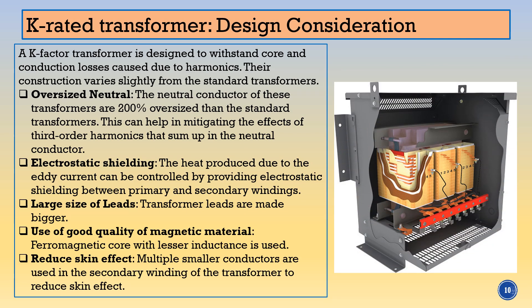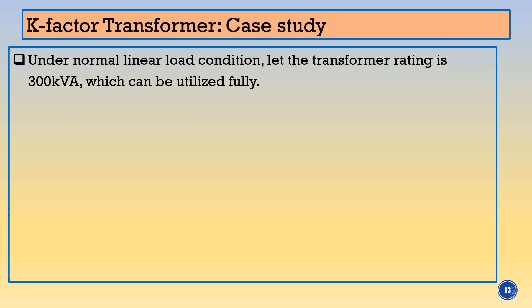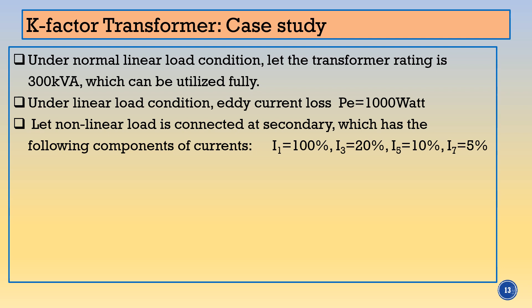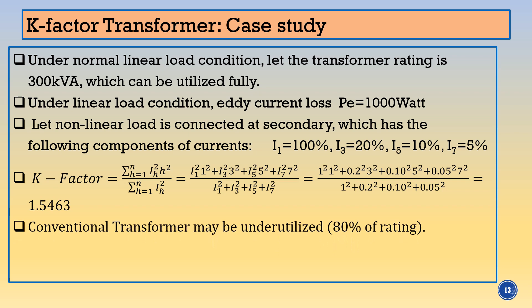We have seen the types of K rated transformer: K1, K4, K7, K13, K20, K30, K40 — these are the different types. Let's take the K factor case study. Under normal linear load condition, the transformer rating is 300 kVA, which is utilized fully, and eddy current losses are 1000 W. The load is nonlinear with I1 = 100%, I3 = 20%, I5 = 10%, and I7 = 5%. The K factor is 1.5463, which is greater than 1 but less than 4. So between K1 and K4, I will choose the transformer K4.